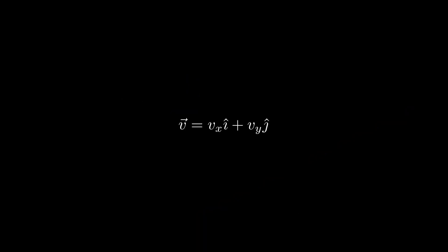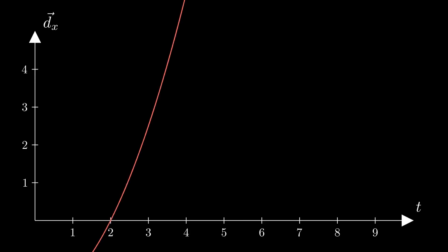By repeating this process for the y direction, we can now describe a vector that is the sum of the y and x velocity. This is our velocity vector, or the vector that describes how far our particle will move and its direction at any point in time.